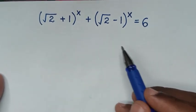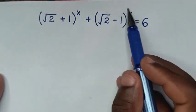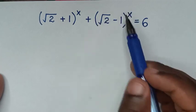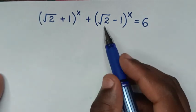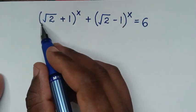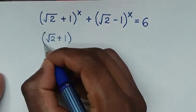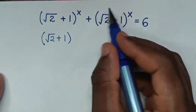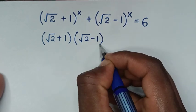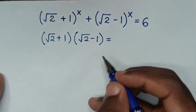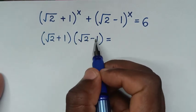In the first step, we have (√2 + 1)^x. To make the second term look the same, we take inside the bracket (√2 + 1) and multiply it by (√2 − 1), so we can make one term the subject and substitute its value later.